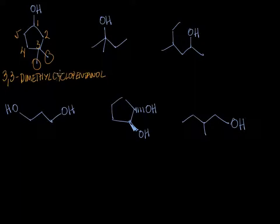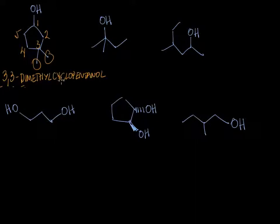A couple of things to note here. We have two methyl groups at carbon-3, so we need two numbers and we use the prefix 'di' for two methyls. We don't have a number for one because we just have one functional group here — a hydroxyl group — and that by definition is located at carbon-1. So the name here is 3,3-dimethylcyclopentanol. Don't forget the 'cyclo' prefix to indicate a ring in your molecule.